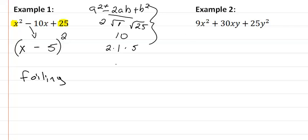So we're looking to see if 2 times the square root of 9 times the square root of 25 is going to give us 30. Well I have 2 times 3 times 5, well guess what? I get 30. So that tells me it is a perfect square trinomial.